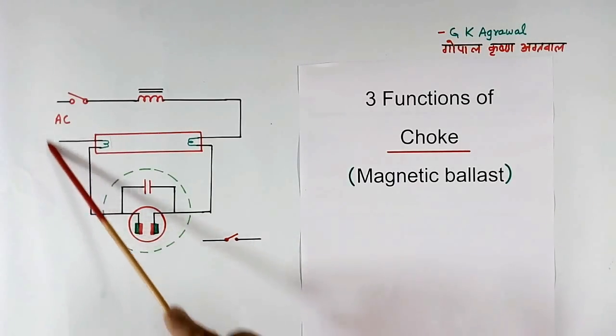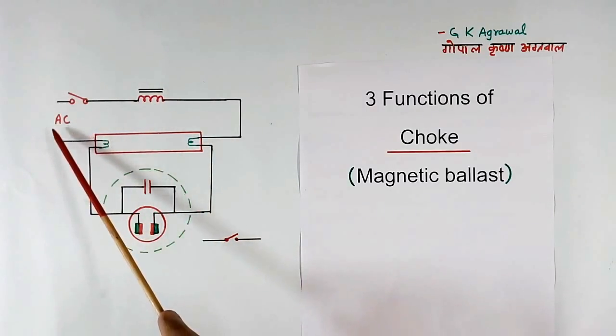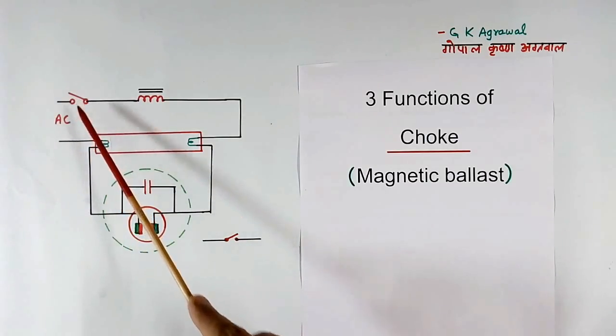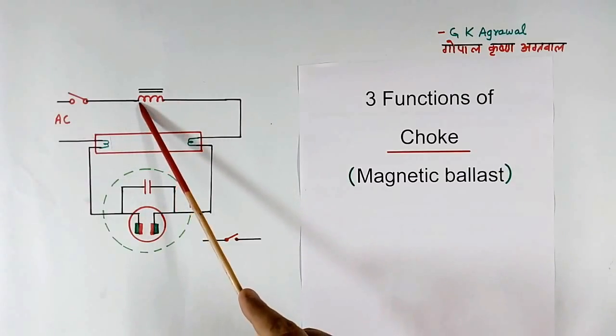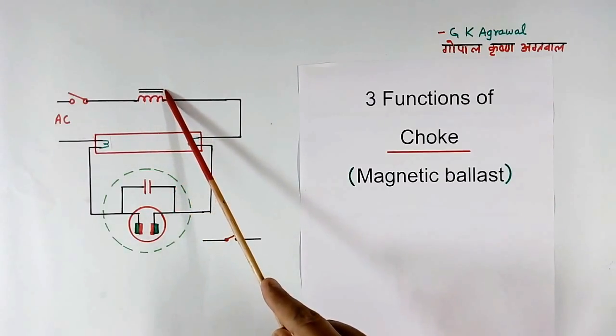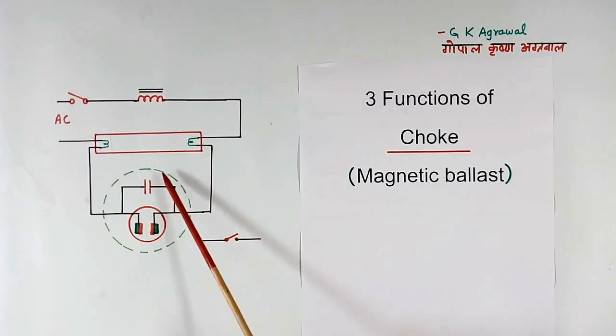This is the circuit diagram or wiring diagram of tube light and choke. This is incoming AC supply. This is the switch to make tube light on and off. This is magnetic choke. These 2 lines mean it is iron core. This is tube light and this full lead is starter.